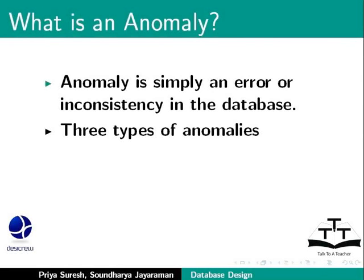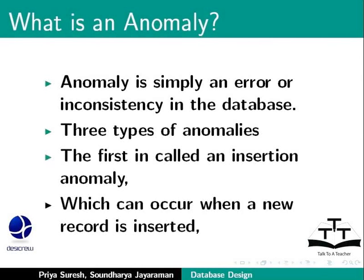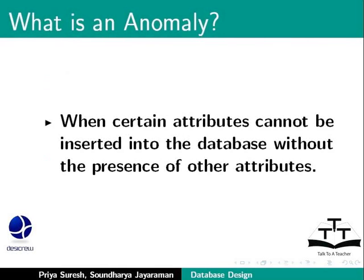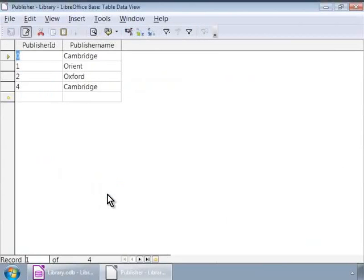There are three types of anomalies. The first is called an insertion anomaly, which can occur when a new record is inserted, or when certain attributes cannot be inserted into the database without the presence of other attributes. For example, suppose there is a new publisher called Penguin. Our design will not let us insert details about Penguin publisher until our library can get hold of at least one book by them.